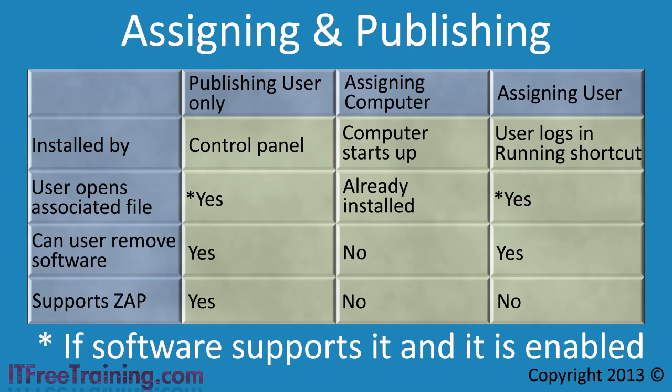Since the software is already installed, the option to have the software installed by associating a file extension with that software is not available. When assigning software to a computer, the user will not have the authorization to uninstall it. Assigning software to the computer is basically forcing the user to have the software — they do not have a choice.